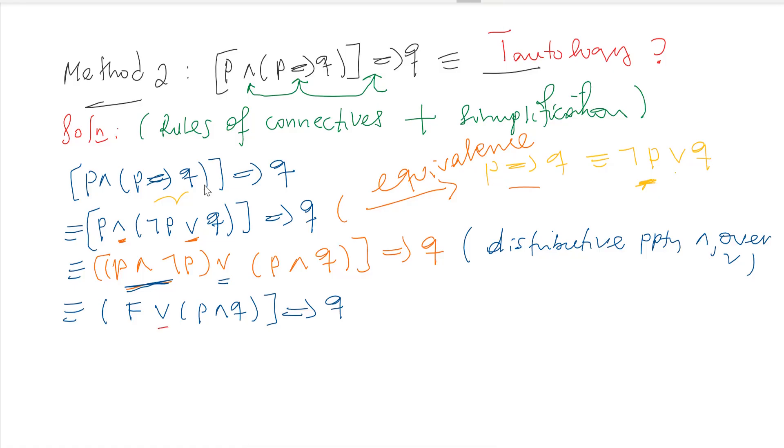This is equivalent to false or [p ∧ q]. False or false is false, false or true is true. [p ∧ q] implies q.